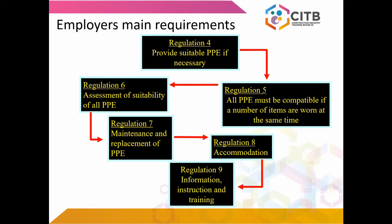Employers' main requirements under PPE regulations: Regulation 4 — the employer must provide suitable PPE if necessary. Regulation 5 — all PPE must be compatible if a number of items are worn at the same time. Regulation 6 — an assessment of the suitability of all PPE. Regulation 7 — the maintenance and replacement of PPE. Regulation 8 — the accommodation where it is stored. Regulation 9 — information, instruction and training.